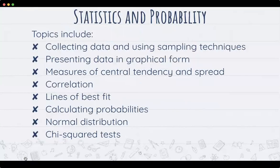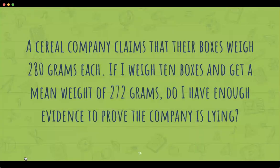Stats and probability includes collecting data and using sampling techniques, presenting data in graphical form, measures of central tendency and spread, correlation, lines of best fit, calculating probabilities, normal distribution, and chi-squared tests. An example problem: a cereal company claims their boxes weigh 280 grams each. If I weigh 10 boxes and get a mean weight of 272 grams, do I have enough evidence to prove that the company is lying?